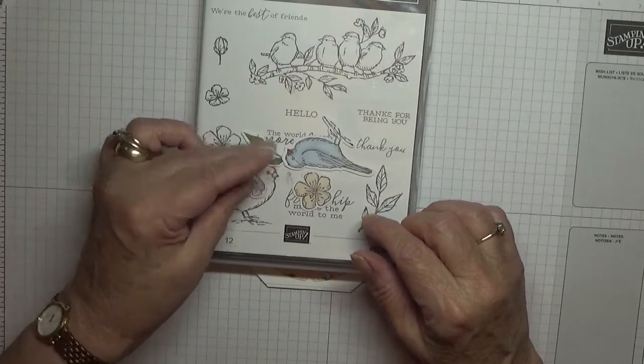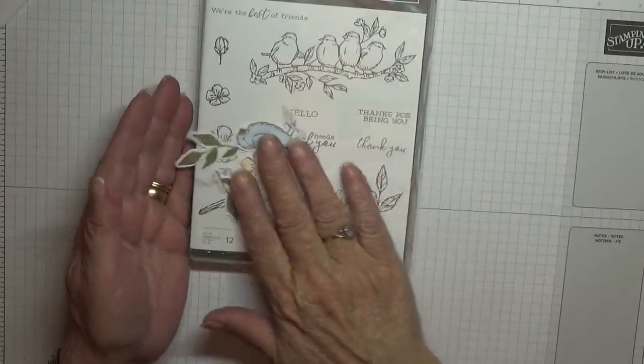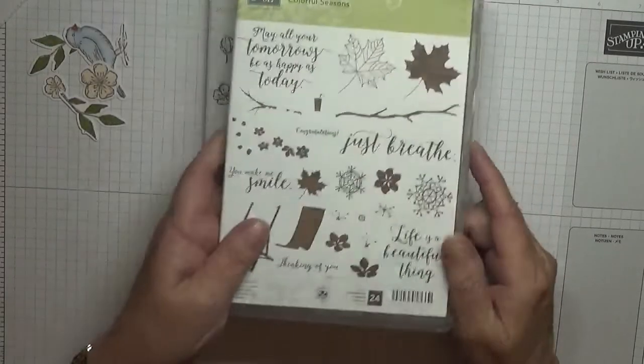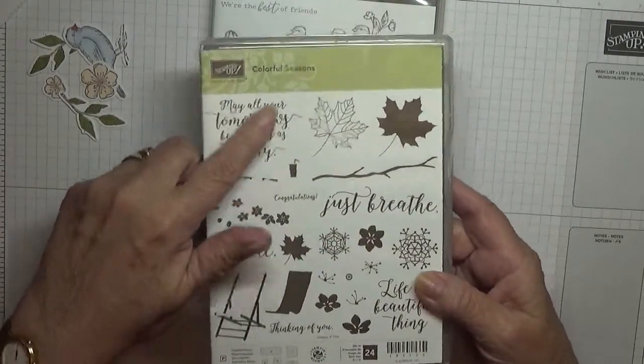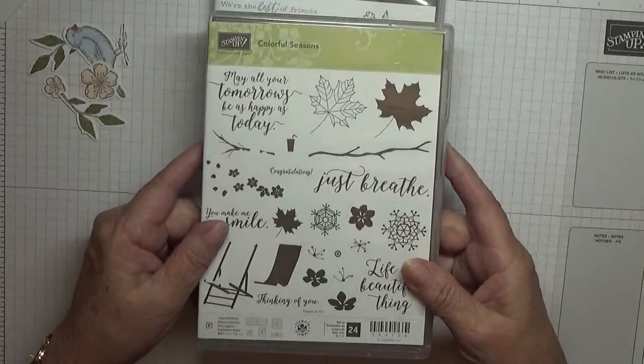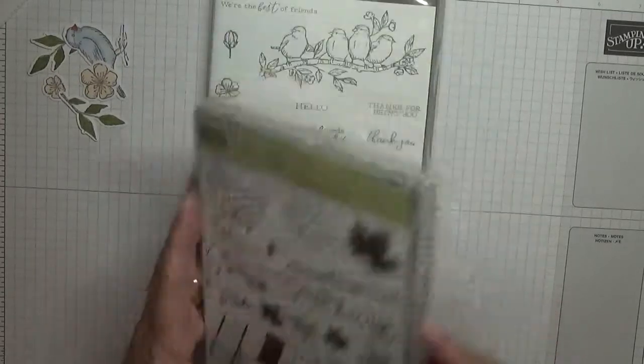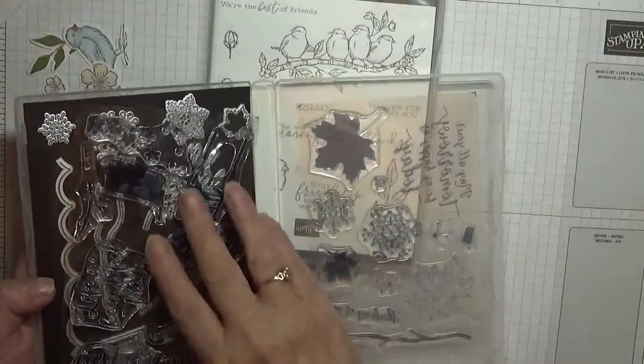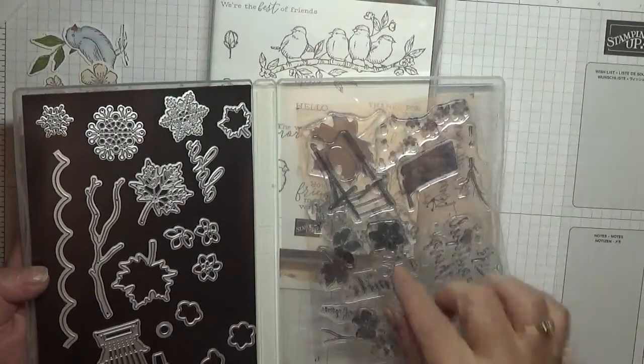They are here, so that's what I've used and cut out and stamped. I'm also using this retired one, Colorful Season, and I'm going to be using that sentiment, may all your tomorrows be as happy as today. I never used this. I got it and then it retired and I think I used one stamp, this one here on a card I made, and that was it.